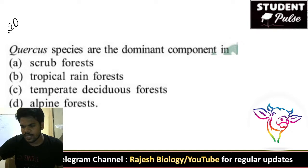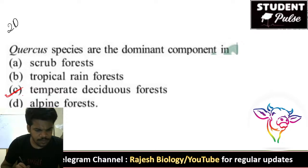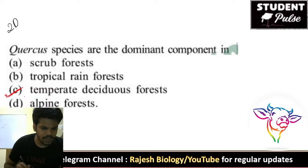Twentieth question: Quercus species are the dominant component in temperate deciduous forests.